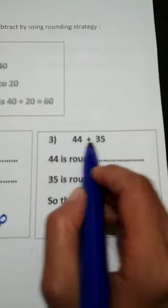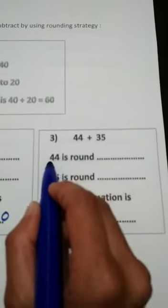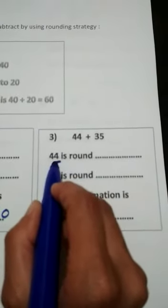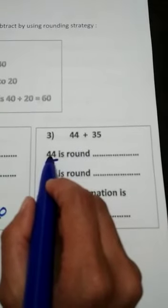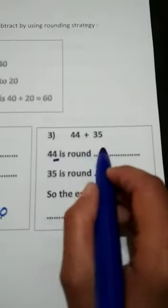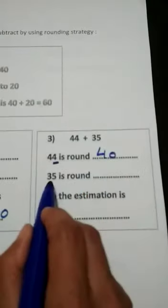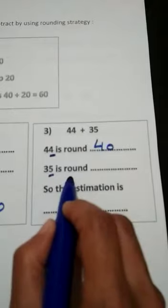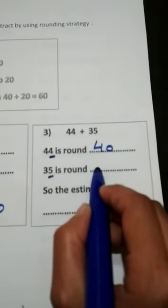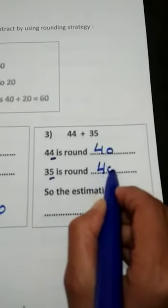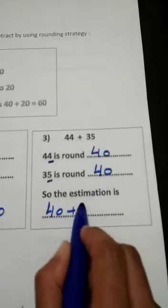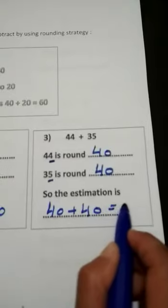Let's try 44 plus 35. For 44, the ones digit is 4 — it's weak, so 44 rounds back to 40. For 35, the ones digit is 5 — it's strong, so 35 rounds up to 40. My estimate is 40 plus 40, which equals 80.